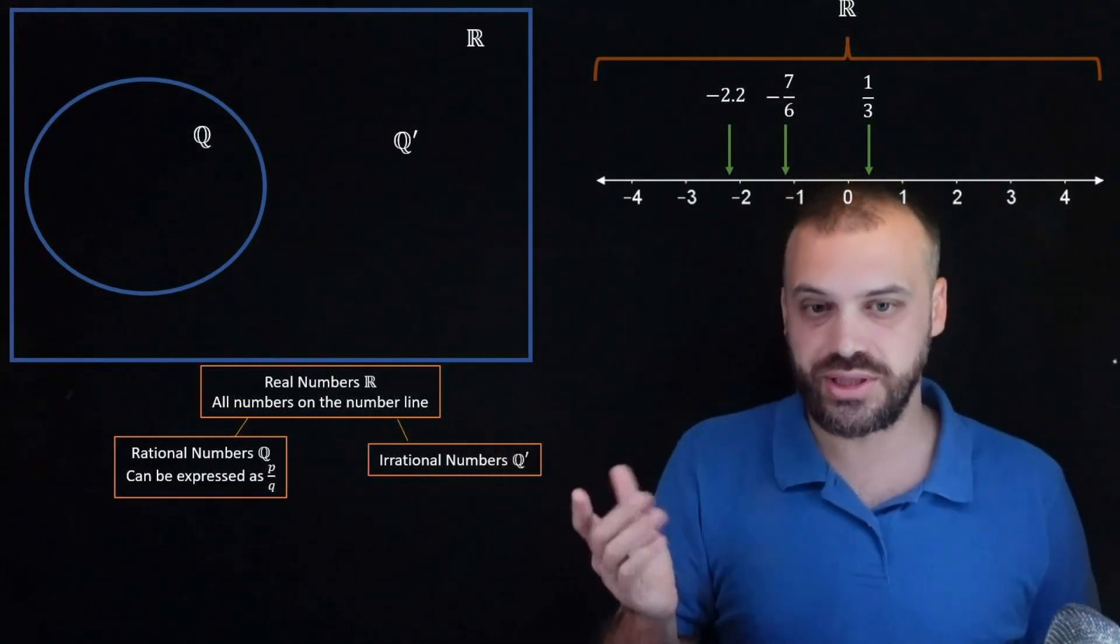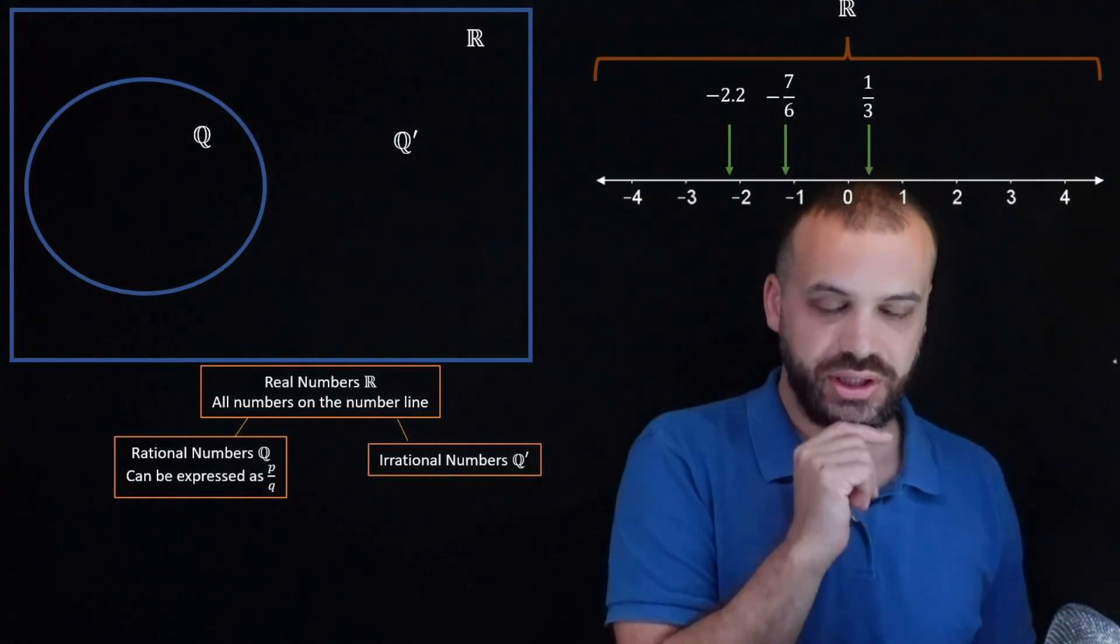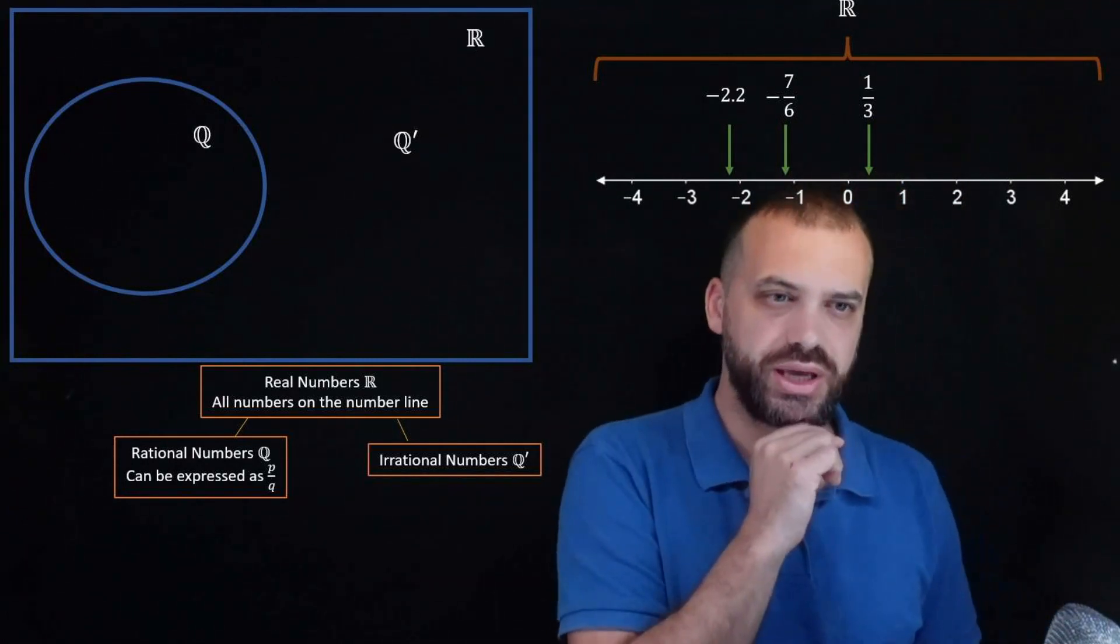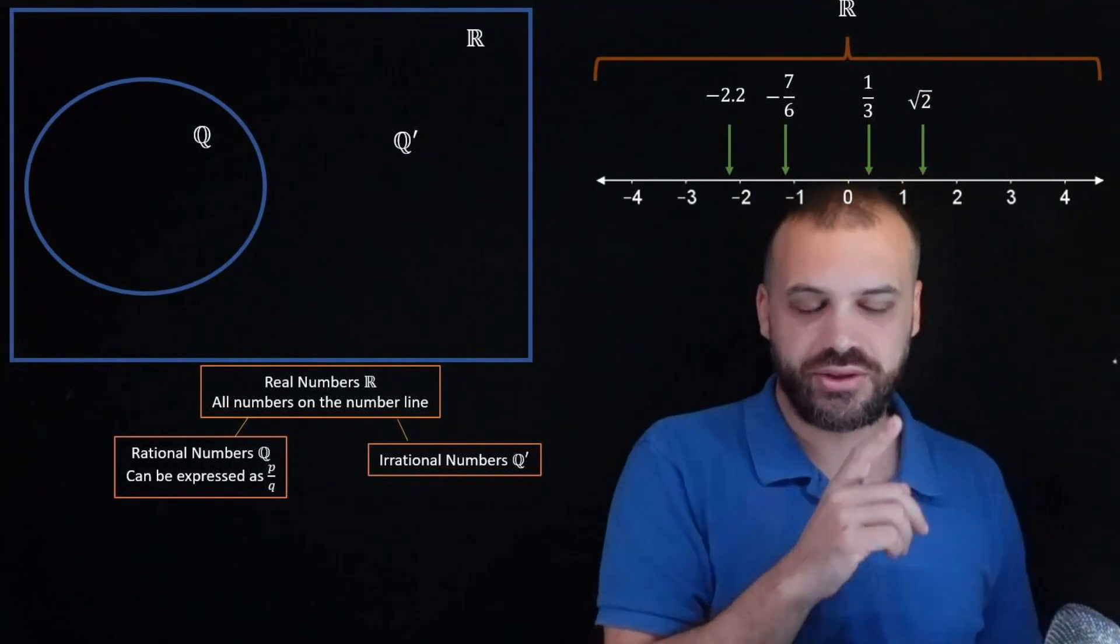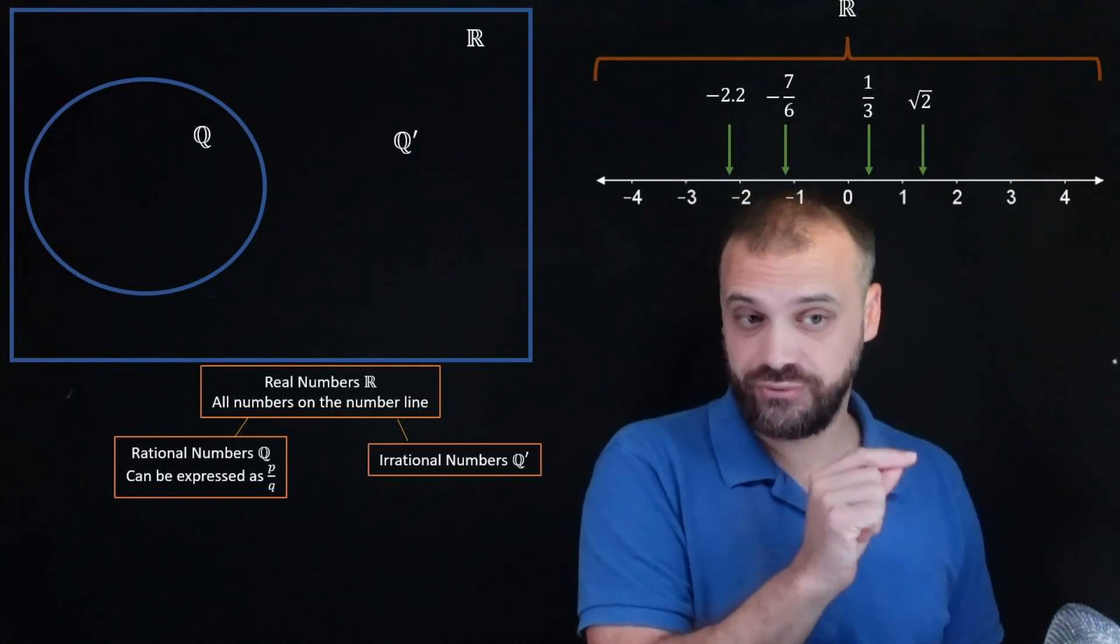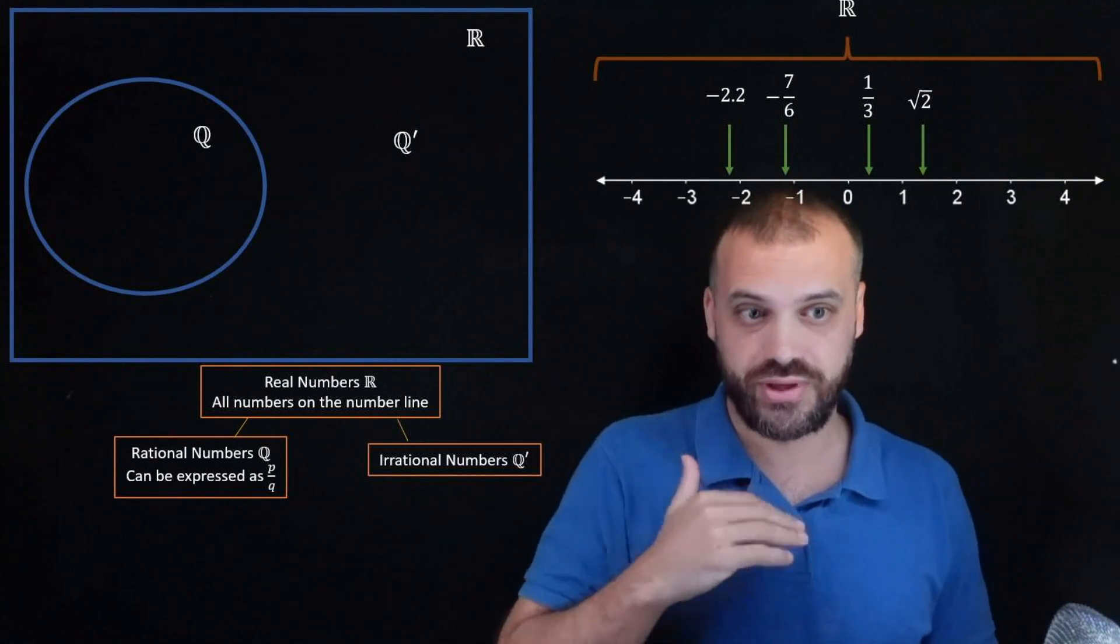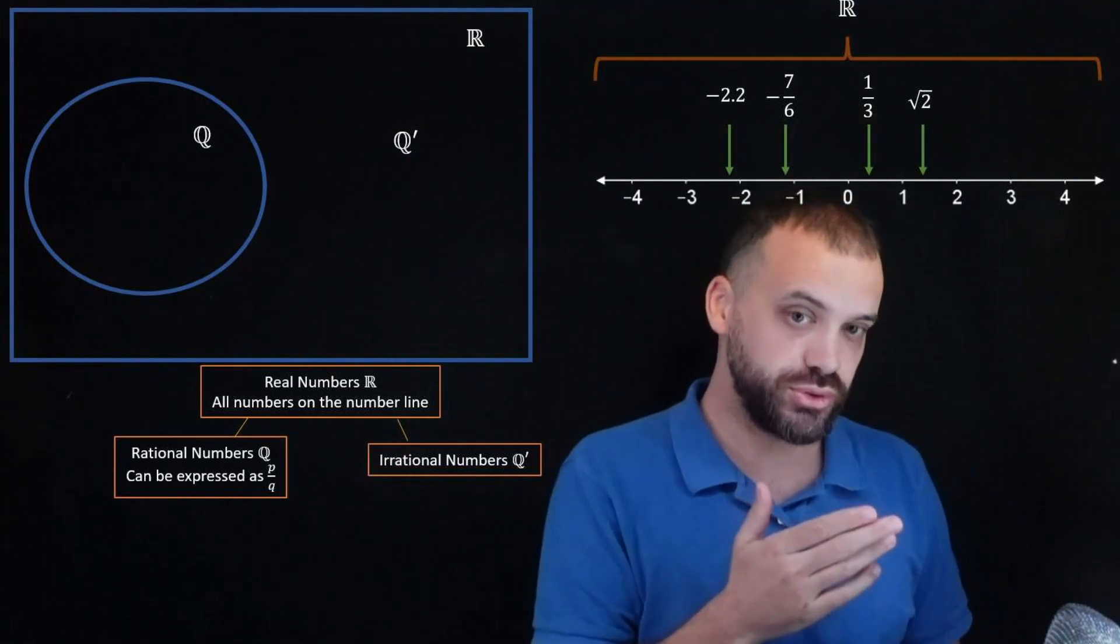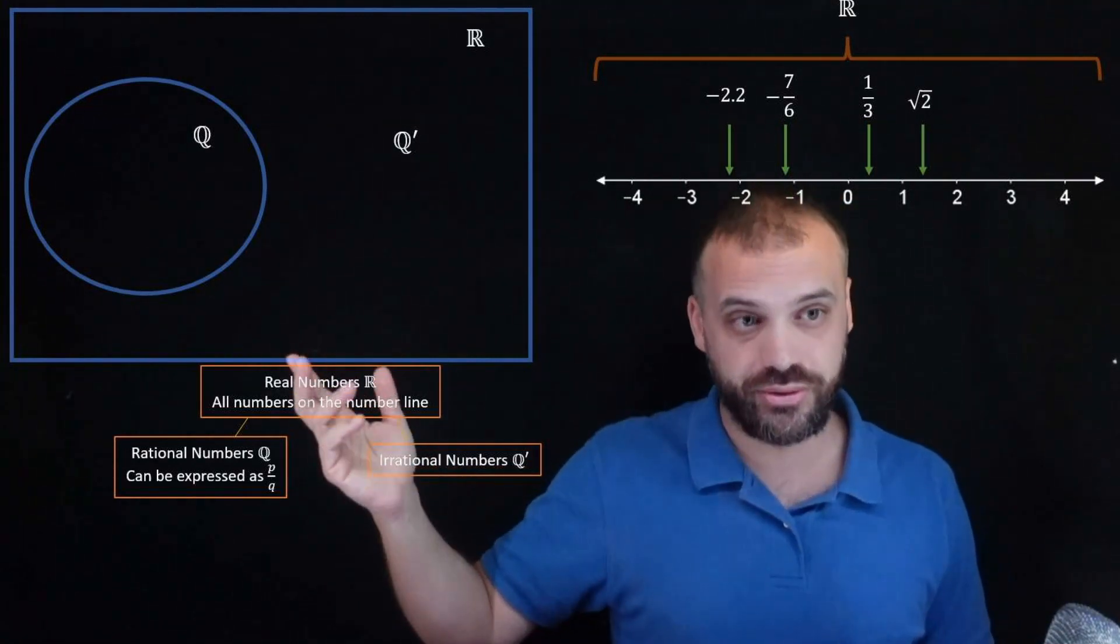Okay, so these are the numbers that can't be expressed as a fraction and you might be thinking, hang on, what do you mean can't be expressed as a fraction? Well we have root 2. Now this famously can't be expressed as a fraction. In fact the legend goes that Pythagoras, one of his pupils tried to explain to him that root 2 couldn't be expressed as a fraction and he threw him over a boat and he drowned.